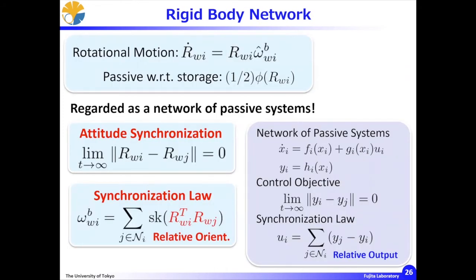Considering the rigid rotational motion R-dot equals R times omega_b wedge, with the storage function one-half phi(R), the rigid body rotational motion is passive. Under the synchronization law with this equation — implying a relative orientation — the network system achieves attitude synchronization. Each R_wi and R_wj should converge; namely, all agents in the network achieve the same orientation. The derivation is quite similar to output synchronization under the same graph assumption.